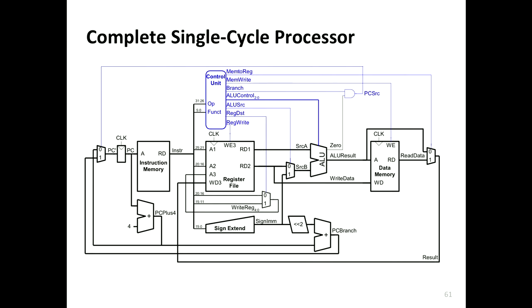The cool part of this architecture is: if you want to implement a new instruction, typically all you need to do is add one additional line in the control unit that generates the appropriate control signals. We will actually see how you can implement a totally new instruction. Of course there are some instructions where you also need changes to the data path.